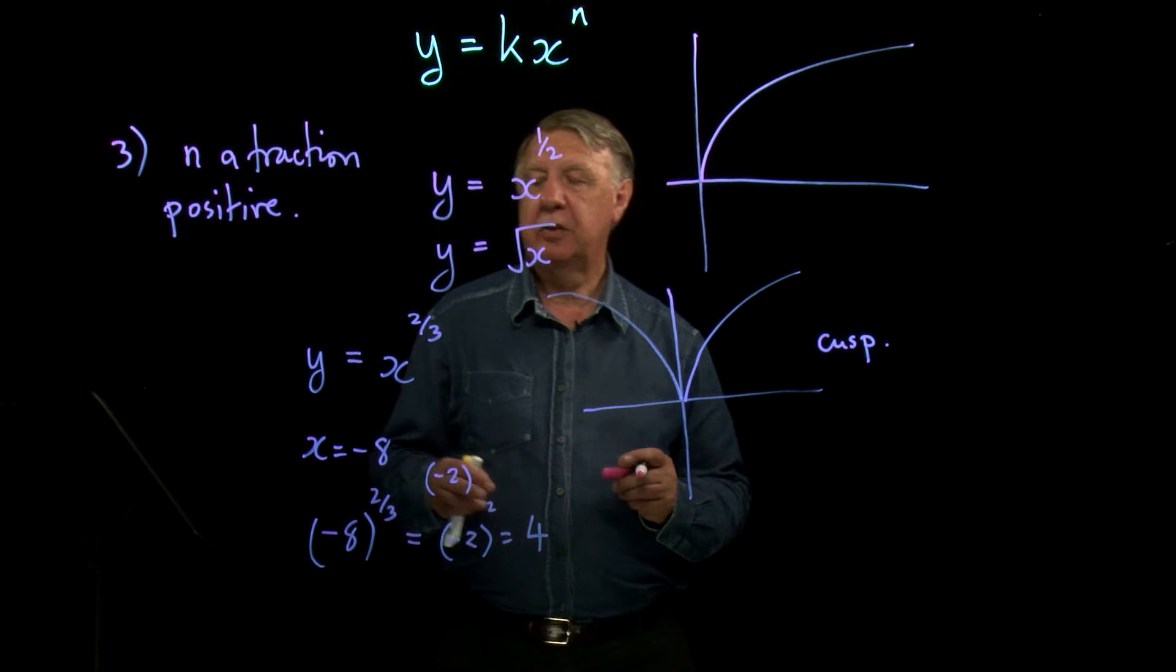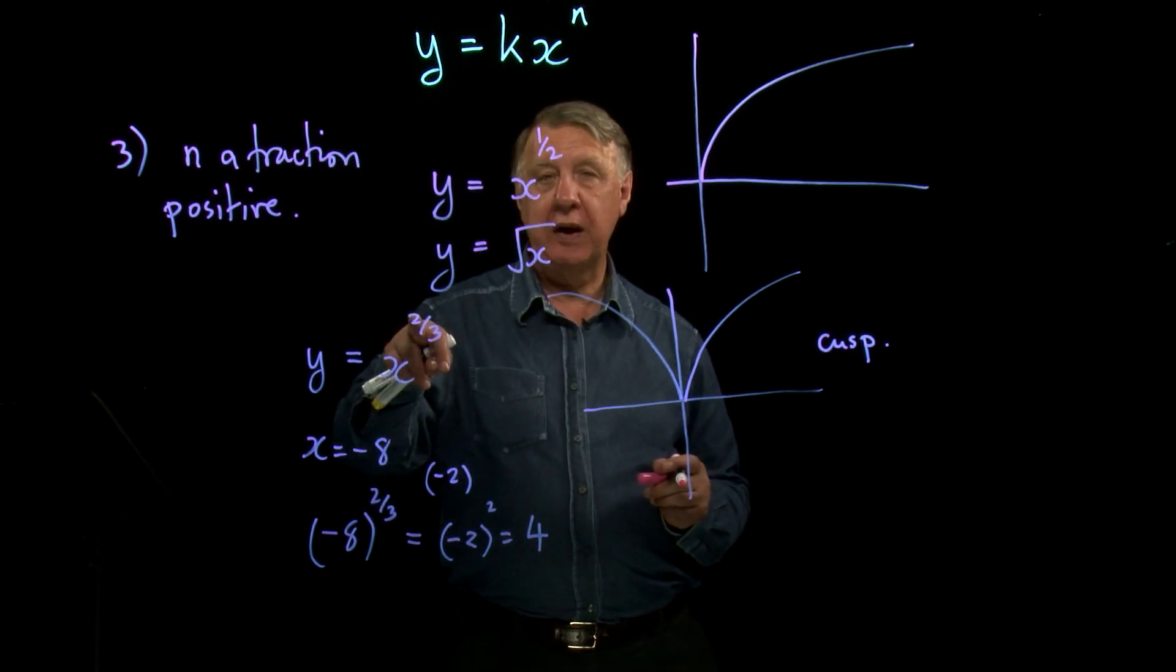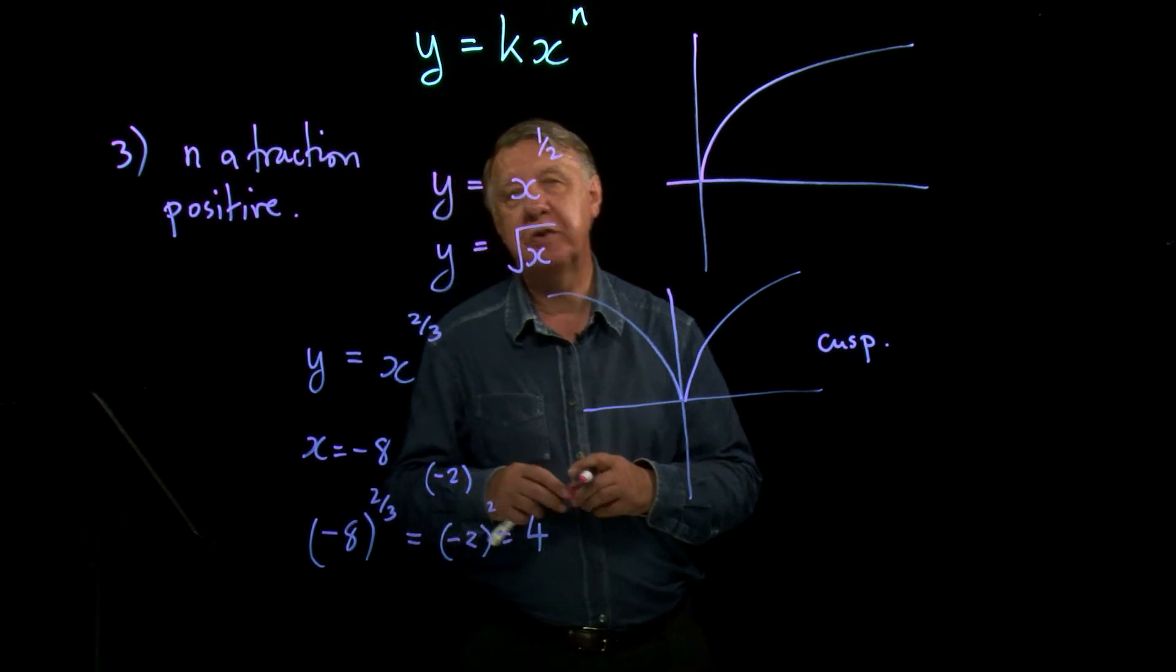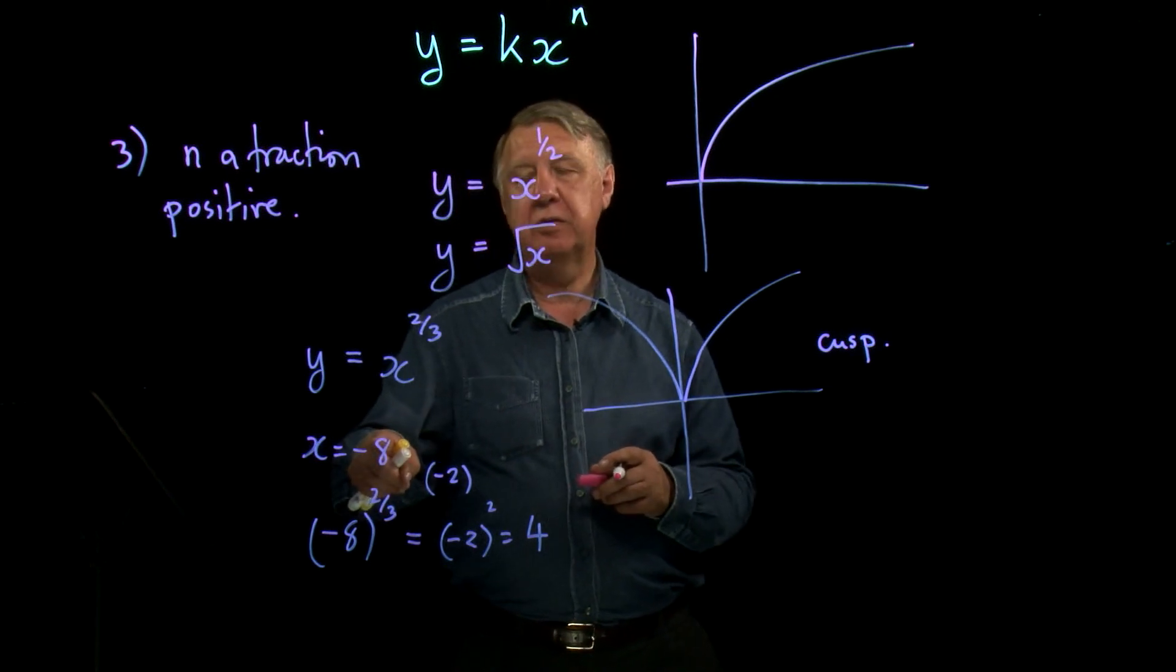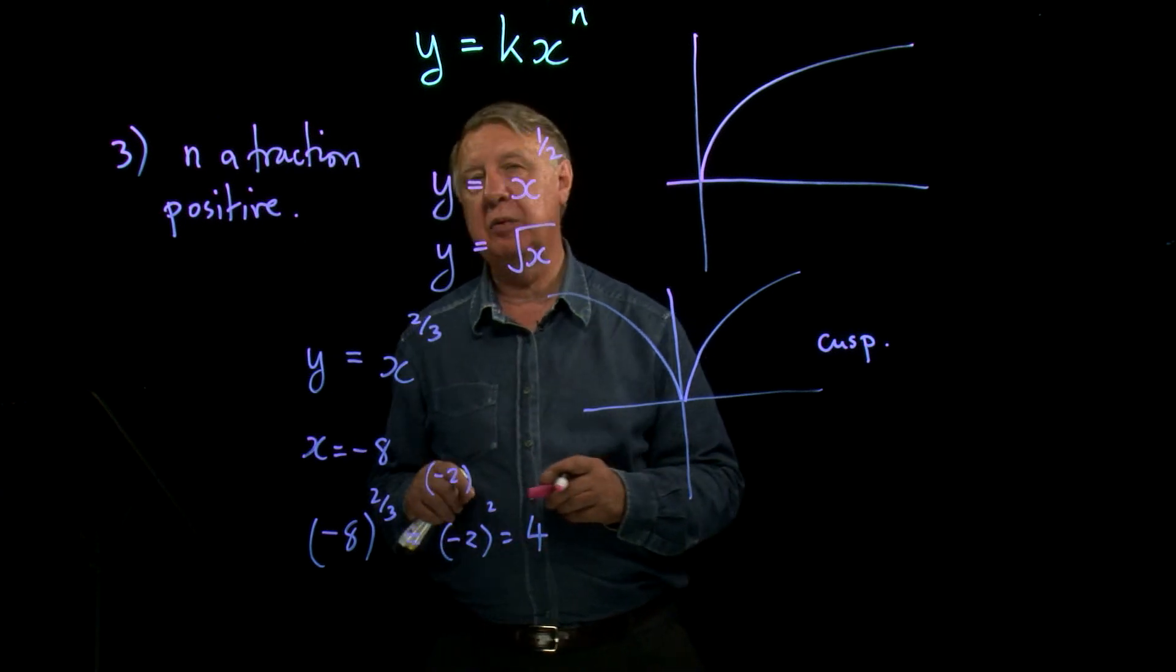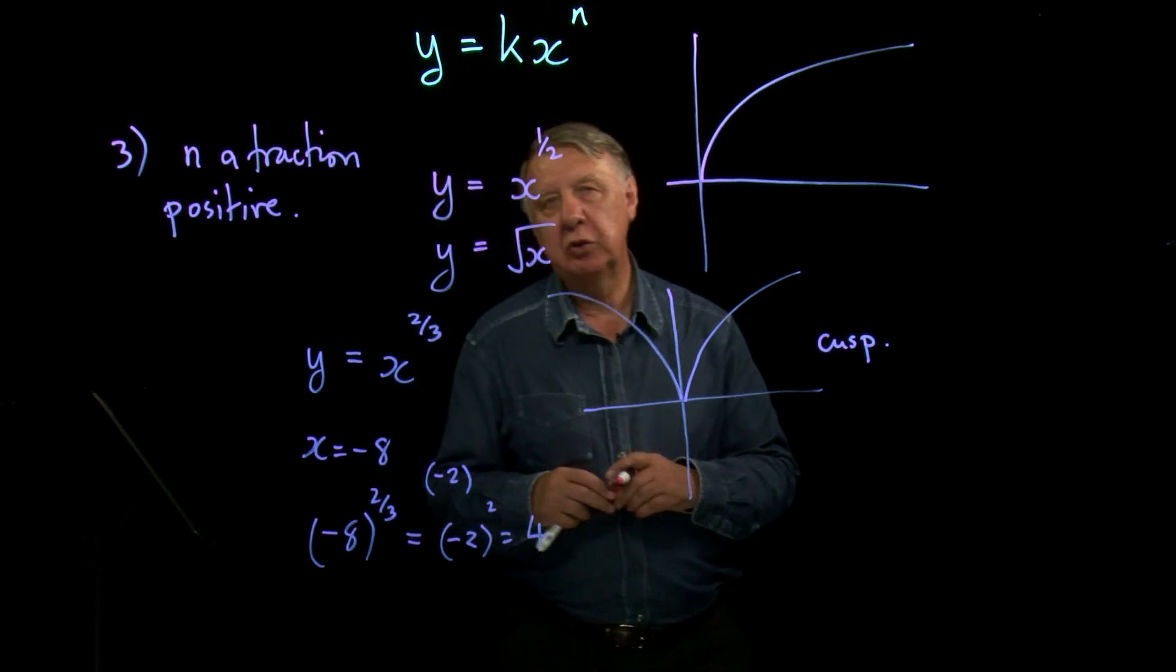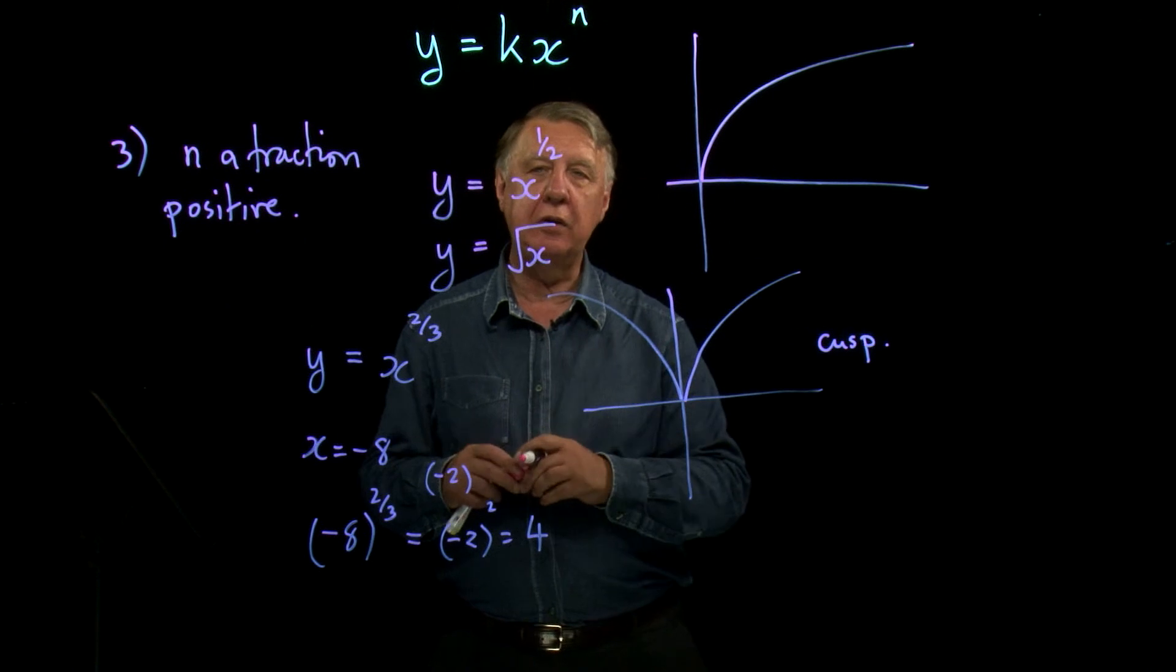On the other hand, you may be the sort of person that squares first and then cube roots afterwards. So if you square negative eight, you get 64. But at least you still end up with four as the answer. So it depends which way you look at this to justify that that's what it looks like.